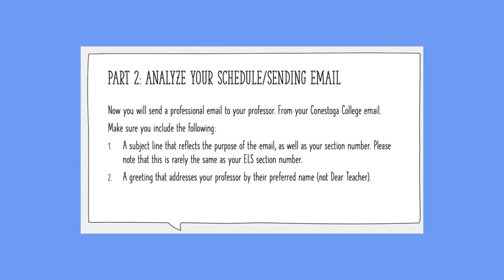Once you've submitted your assignment, you need to send an email to your professor. This must be from your Conestoga College email account — your Outlook account — which you can access through the Outlook app, the Conestoga College website, or the student portal. When you send your professor an email, make sure the subject line reflects the purpose of the email as well as your section number — for example, 'Assignment 1, Section 3.' Note that the section number for LIBS 1810 or LIBS 1540 is not the same as your section number for your ELS class.